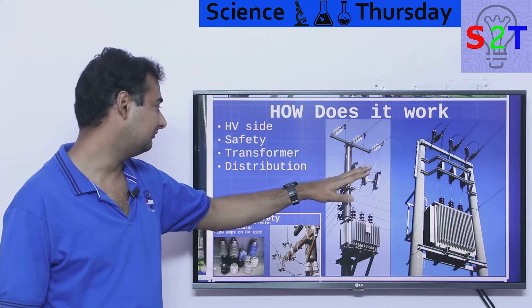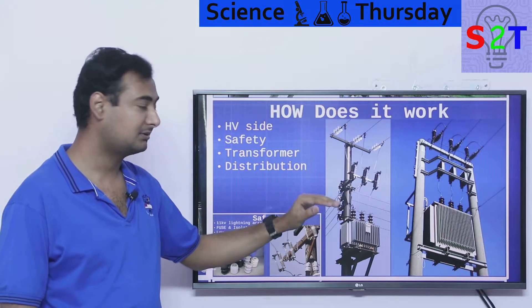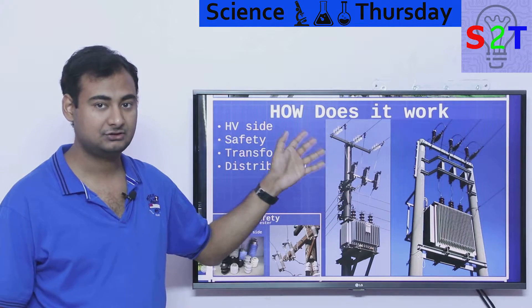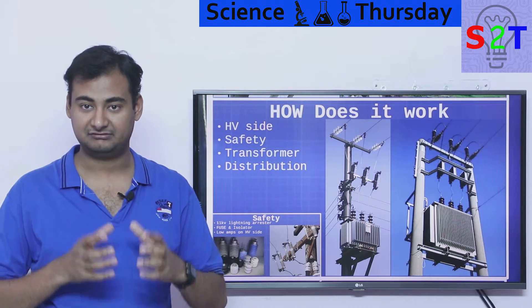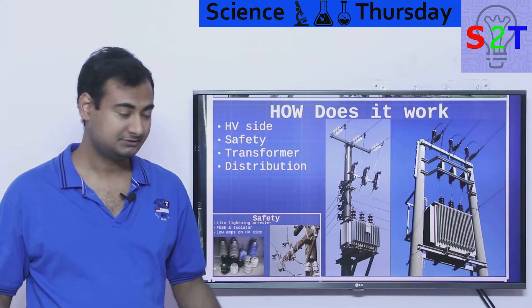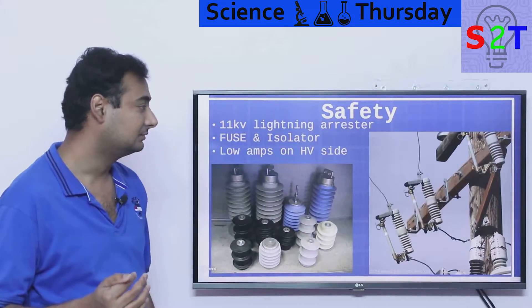This is how it works: you have high voltage, you have safety mechanism, you have transformer, and you have distribution. How do you find out which is high voltage? Basically, whatever conductor that's carrying high voltage would be very spread out to make sure that it cannot short circuit.